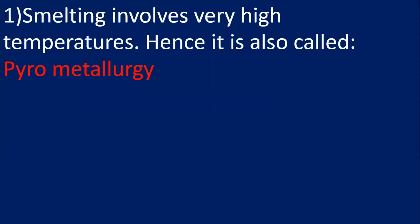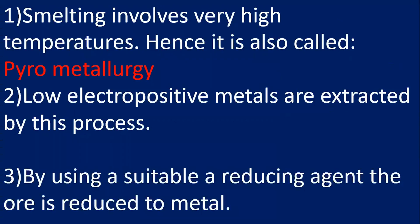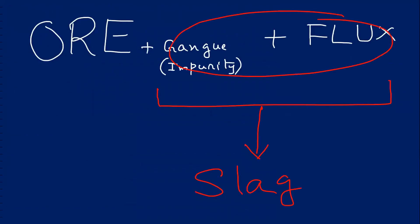Smelting involves very high temperatures, so this is called pyrometallurgical process. Low electropositive metals are extracted by this process. By using a suitable reducing agent such as carbon monoxide, ore is reduced to metal. Ore has impurity. Flux reacts with the impurity forming slag.